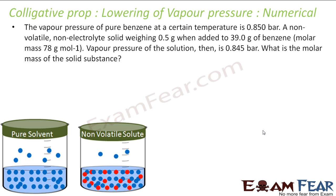The question is: the vapor pressure of pure benzene at a certain temperature is 0.85 bar. A non-volatile solute weighing 0.5 gram is added to 39 gram of benzene. The molar mass of benzene is also given. The vapor pressure of the solution is 0.845 bar. What is the molar mass of the solute?